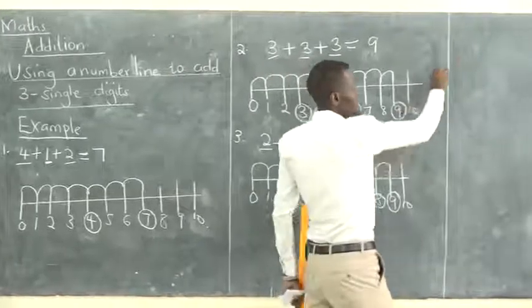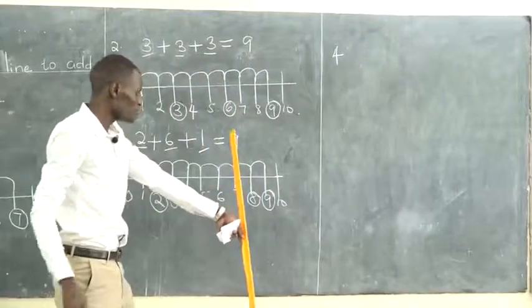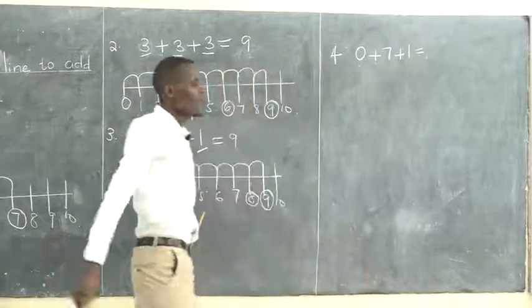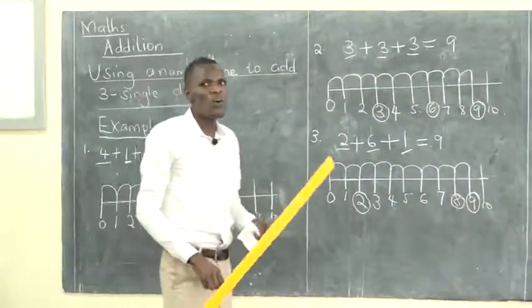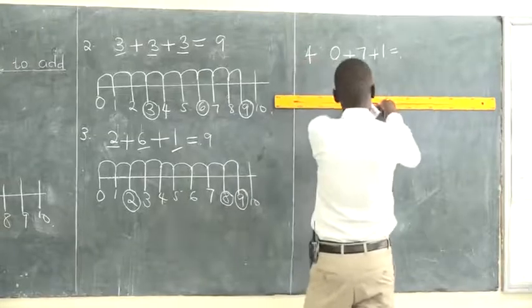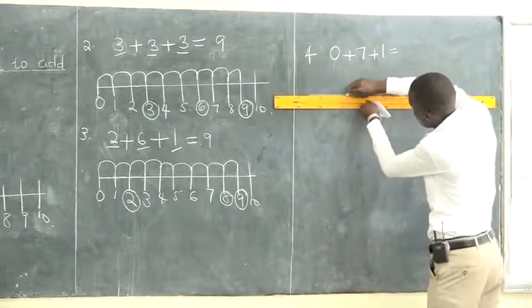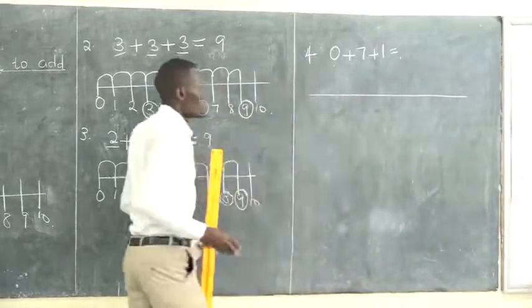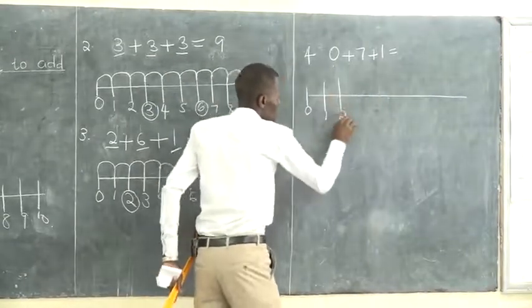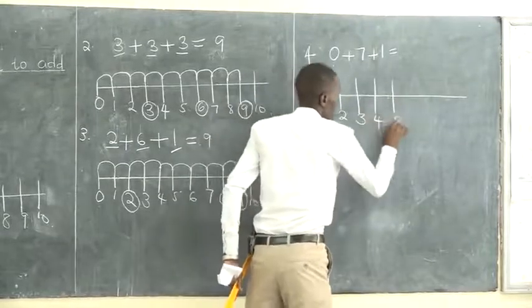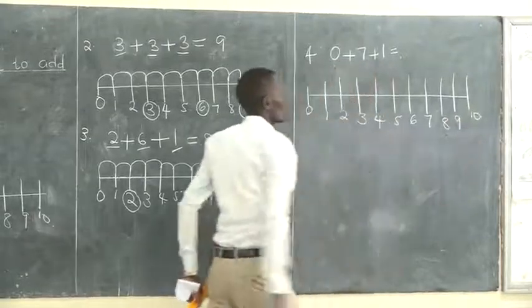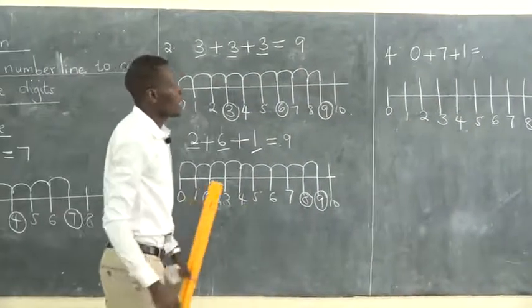Let's have the last example — example four: zero plus seven plus one. The first step is always to draw our line. Our line is here. After you draw the line, show the numbers: zero, one, two, three, four, five, six, seven, eight, nine, ten. Now, what are we adding? We are adding zero.